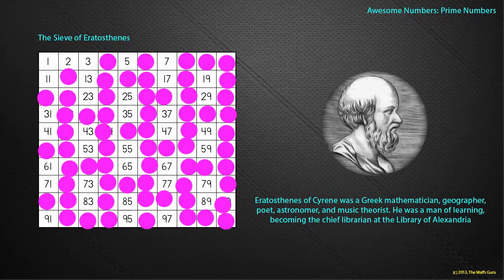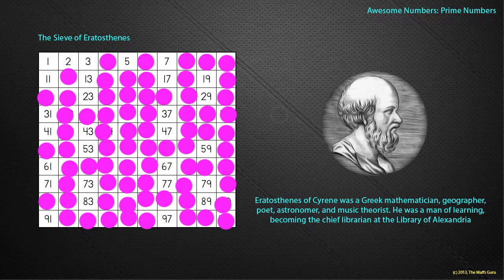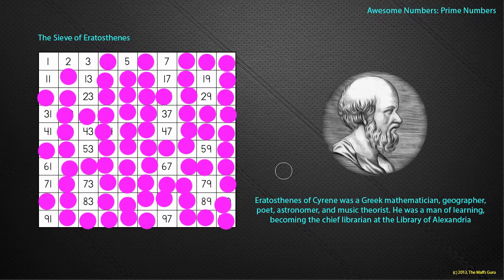The four times table had already been pretty much all covered over. What about the five times table? Exactly the same thing — he covered over all the numbers in the five times table but not five itself. The six times table was already done because those numbers are in the three times table. Then the seven times table: 7, 14, 21, 28, 35, 42, 49 — he covered over 49 and went on, covering the numbers in the seven times table but not seven itself.